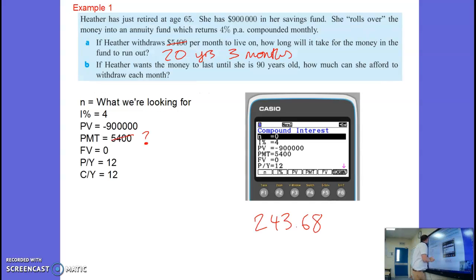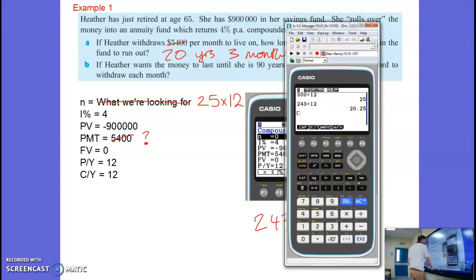And the N now is she wants it to last until she's 90 years old. So if she's 65 now, from 65 up to 90, that's 25 years monthly. Make sure you remember we're dealing with months. So we're going to put that information in. So let's grab our calculator again.